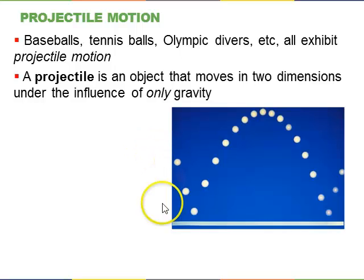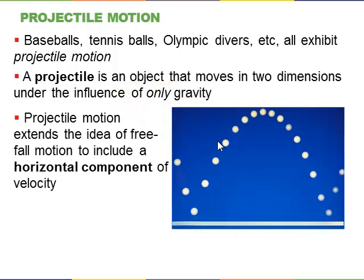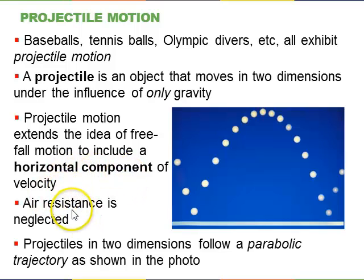A projectile is an object that moves around in two dimensions under the influence only of gravity. So we neglect things like air resistance or there can't be any strings attached or anything like that. So this extends freefall motion, it's similar to freefall motion, in that it's accelerating downwards at 9.8 meters per second squared, but in general there can be a horizontal component of the velocity. As I said, air resistance is neglected, so things that fly, like a paper airplane, are not projectiles by this definition.